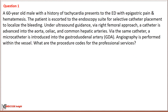Practice Question 1: A 60-year-old male with a history of tachycardia presents to the emergency department with epigastric pain and hemostasis. The patient is escorted to the endoscopy suite for selective catheter placement to localize the bleeding. Under ultrasound guidance, via right femoral approach, a catheter is advanced into the aorta, celiac, and common hepatic arteries. Via the same catheter, a micro catheter is introduced into the gastroduodenal artery. Angiography is performed within the vessel. What are the procedure codes for the professional services?